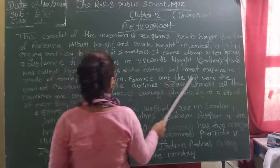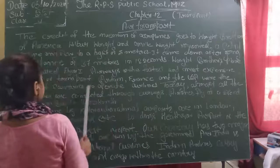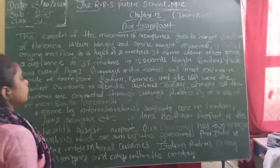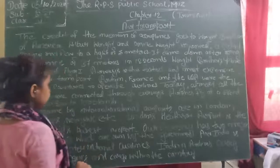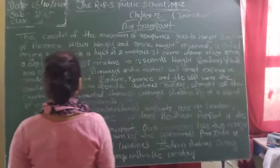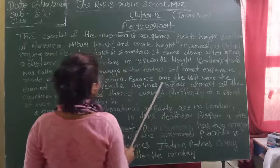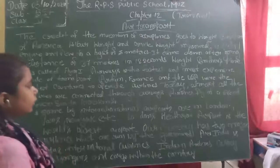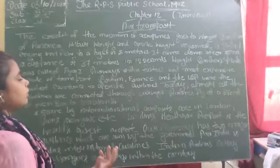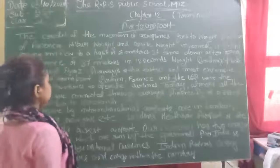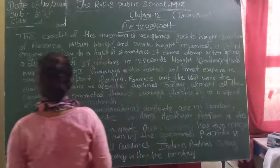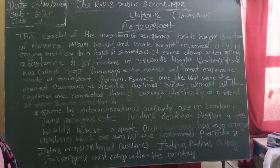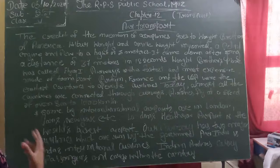Britain, France, and the USA are the earliest countries to operate airlines. Now, almost all countries are connected through airways. Airlines fly at a speed of 800 to 1000 km per hour.